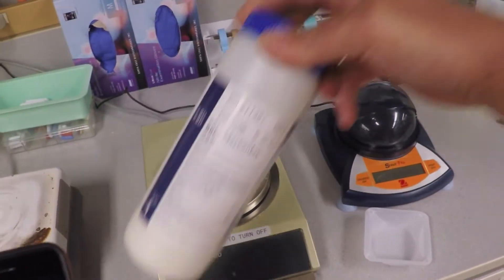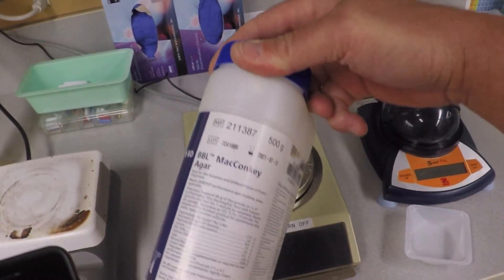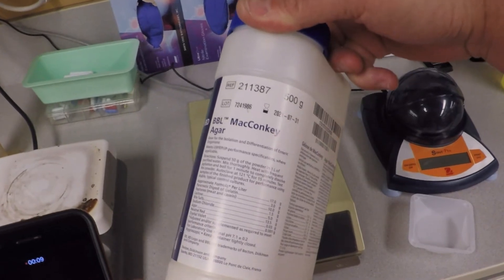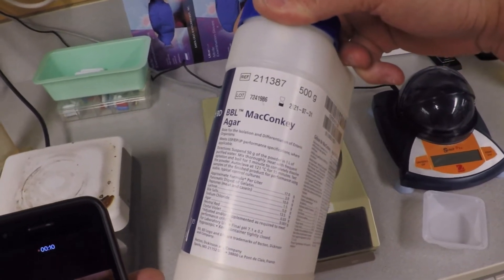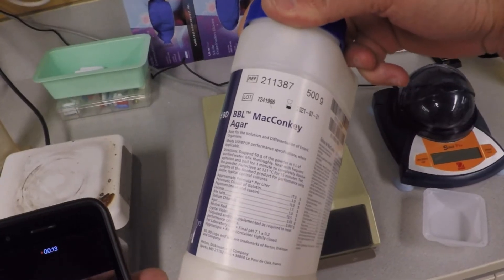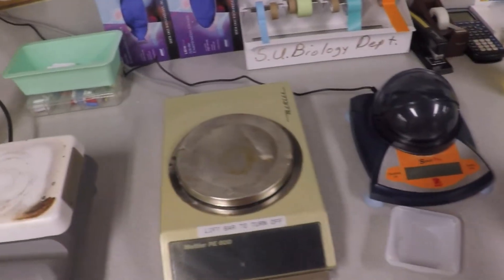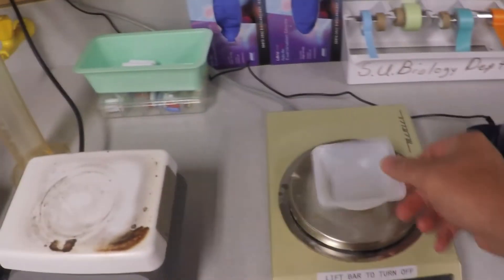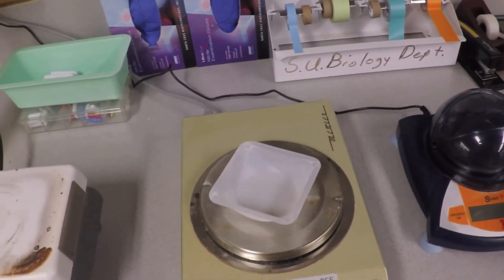Okay, so let's make some media. We're going to make something called McConkey's agar. It says on the label 50 grams per liter. We're making 500 mils, so that means we're going to use 25 grams.